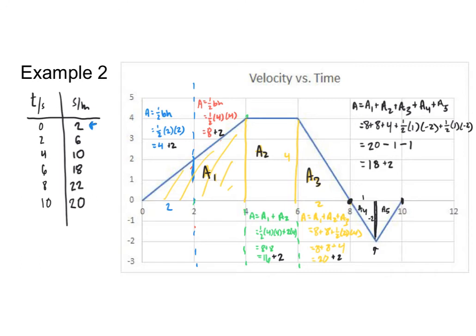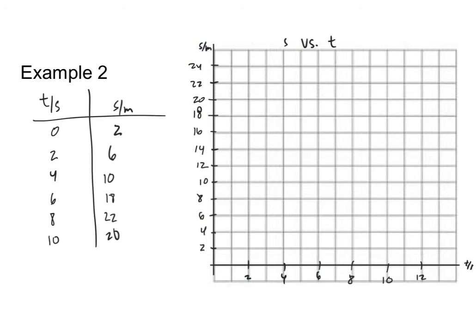Now I have all the data needed to create the position-time graph. I have my data table with positions and times, my graph with axis labels, title, and numbered axes. The x-axis and y-axis intersect at the bottom since all positions are positive. Plotting the points: at zero seconds, position two; at two seconds, position six; at four seconds, position ten; at six seconds, position eighteen; at eight seconds, position twenty-two; and at ten seconds, position twenty meters.